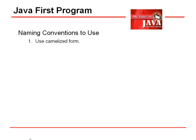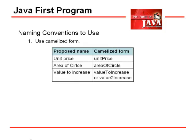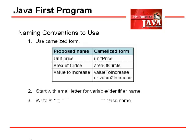We should also follow naming conventions. On this tutorial, we use camelCase form, where the second word is capitalized. This improves readability as we read our program. Remember, spaces are not allowed in variable names. We start with a small letter for variable and identifier names — all variable names in our examples are in small letters. We write in a big letter for program or class names, so all of our programs start with a capital letter.